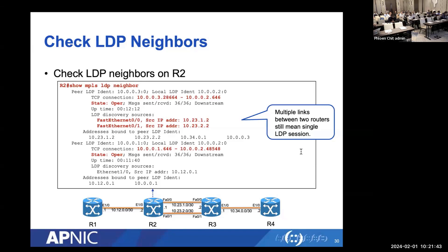If Router 2 also connected through an additional Router 5 to Router 4, you would see different outgoing label values for each path — one via Router 3, one via Router 5 — since ECMP can happen with MPLS forwarding.